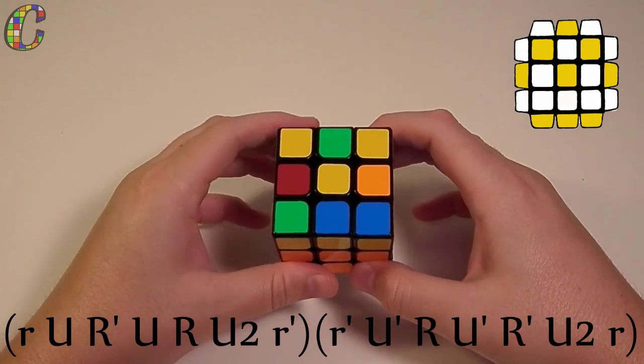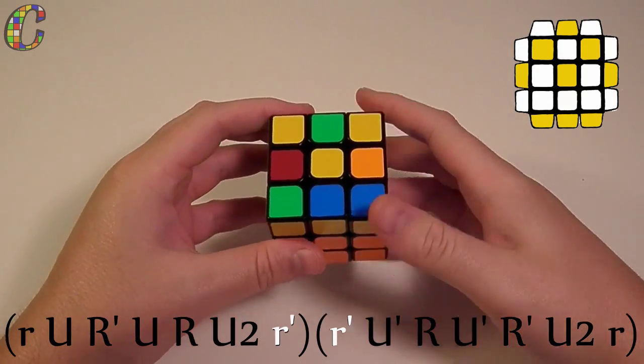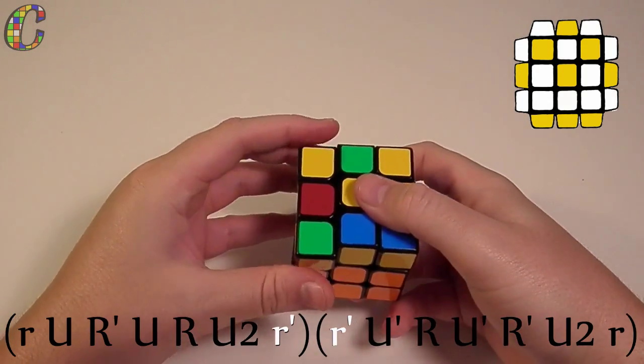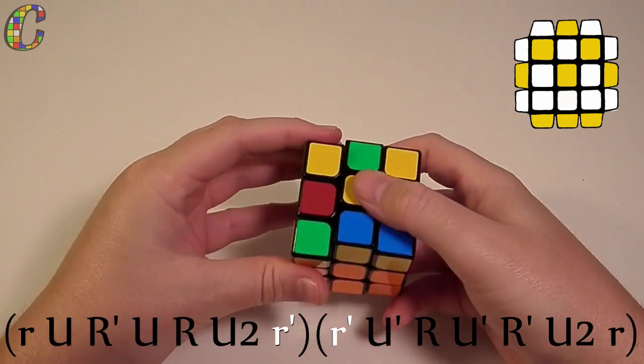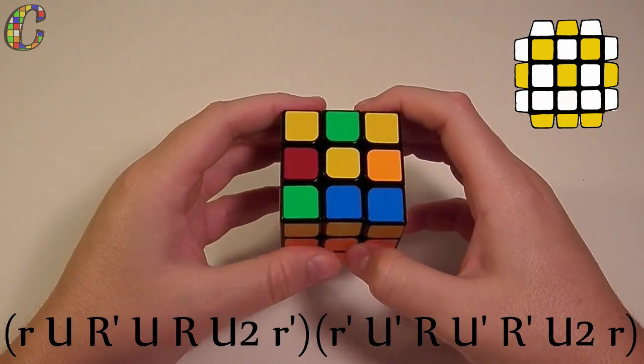Halfway through that algorithm, you can see there are two small r primes in a row, so you can just re-grip there and do a small r2' and it makes it a little quicker. And here's how I execute that case.